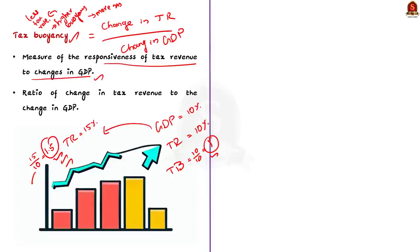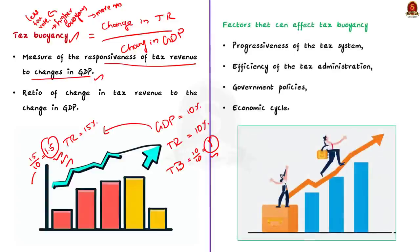There are a number of factors that can affect tax buoyancy. The first is the progressiveness of the tax system. A progressive tax system means the tax rate increases as income increases, so higher income earners pay a larger share of taxes and the tax system will be more buoyant. For example, the income tax system in India is progressive.